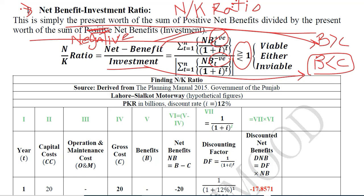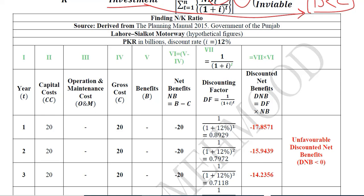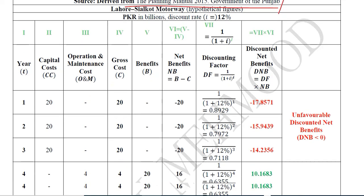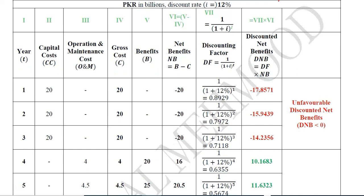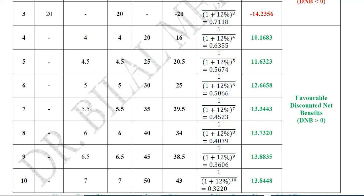Let's work through a numerical example of the Net Benefit Investment Ratio using the same example we have been using for NPV and BCR. We are going to apply the NBIR on the same stream of benefits and costs, which you are well familiar with. It is a 10-year stream.